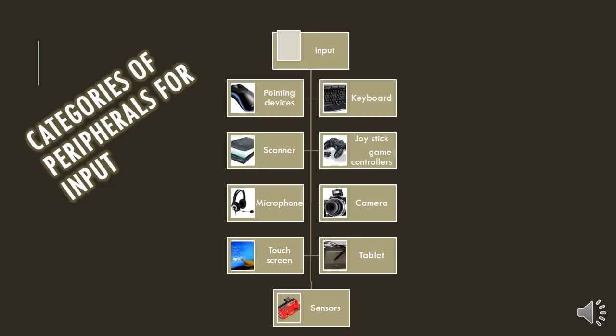You get pointing devices, scanners, microphones, touch screens, keyboards, joysticks or game controllers, cameras, tablets and sensors.